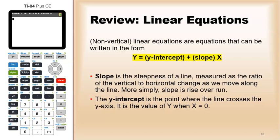If you want to put it a little more simply, slope is rise over run. The y-intercept is the point where the line crosses the y-axis.